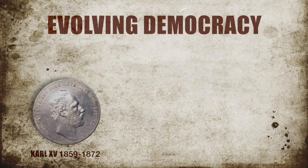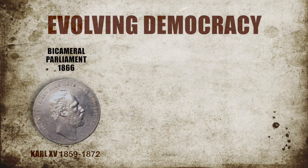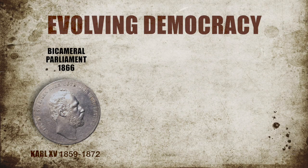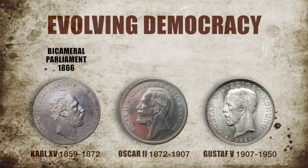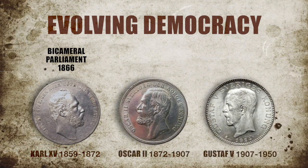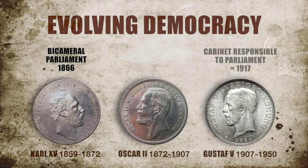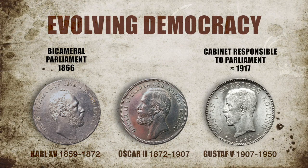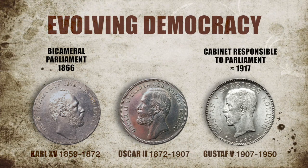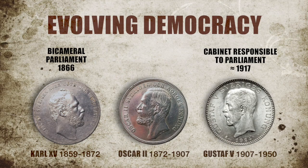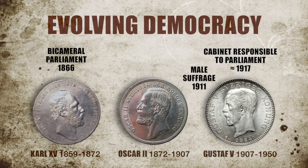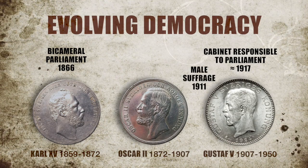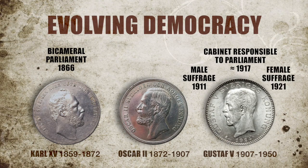Sweden was largely liberalized politically through the introduction of a bicameral parliament in 1866. The process of making the cabinet responsible to parliament, rather than the king, is usually considered to have been completed around 1917. Universal male suffrage was established in 1911, female suffrage in 1921.